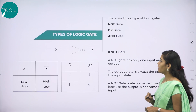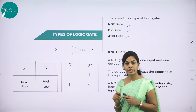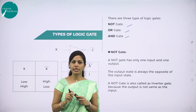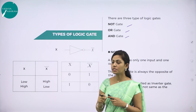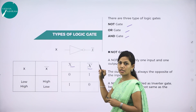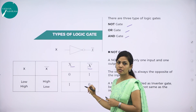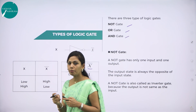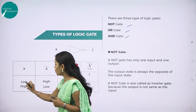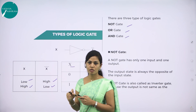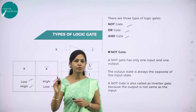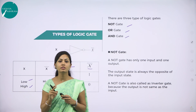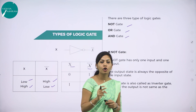There are three types of logic gates: NOT gate, OR gate, and AND gate. The NOT gate is called an inverter. An inverter is a gate with only one input signal and one output signal; the output state is always the opposite of the input state. An inverter is called a NOT gate because the output is not the same as the input — the output is the complement. If input is low, complement is high; if input is high, complement is low. X complement is x-bar, Y complement is y-bar.